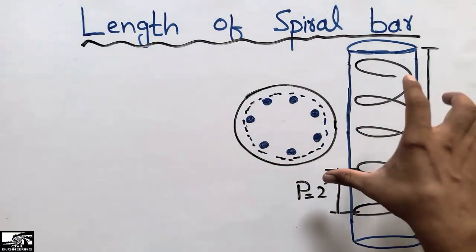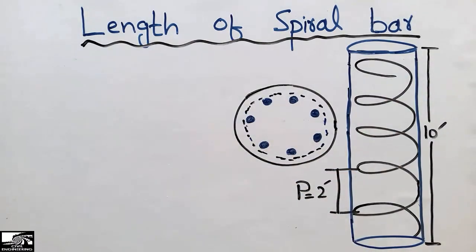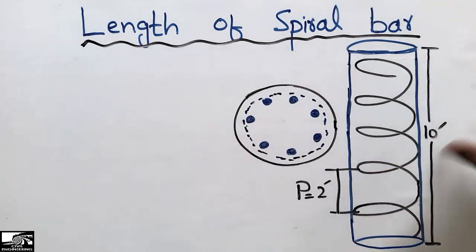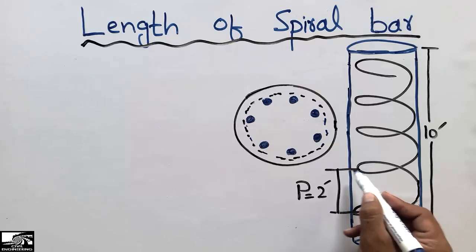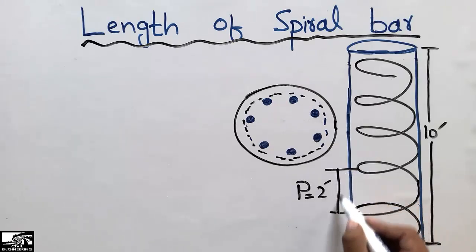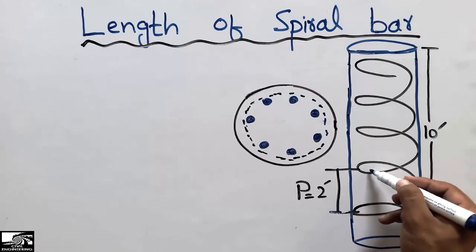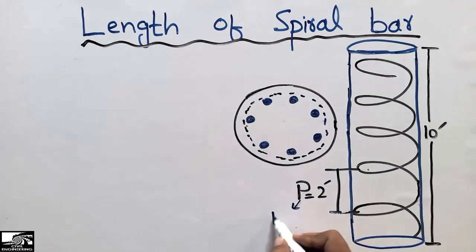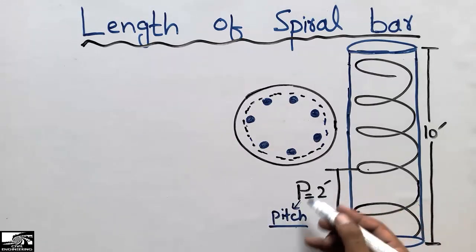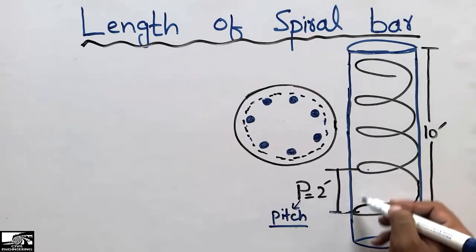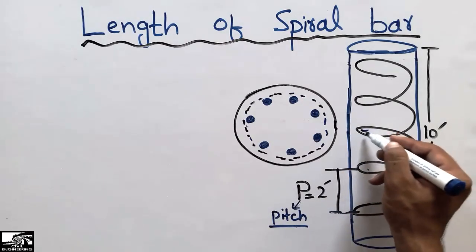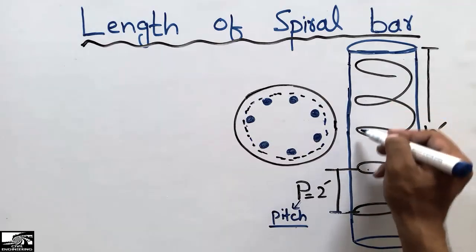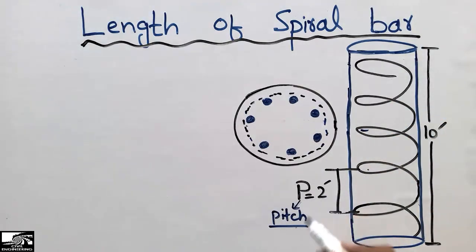I have taken an example from a book in which we have a circular column. The height of the column is ten feet and the distance between each spiral is two feet. This distance between two consecutive spirals is known as the pitch — that is the technical term used in engineering. The pitch is given as two feet in this case.